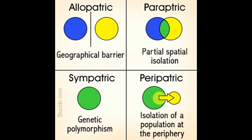The evolutionary process that leads to the formation of a new species from an existing one is termed speciation. This video provides a brief description of the four basic modes of speciation: namely allopatric, parapatric, peripatric, and sympatric speciation.